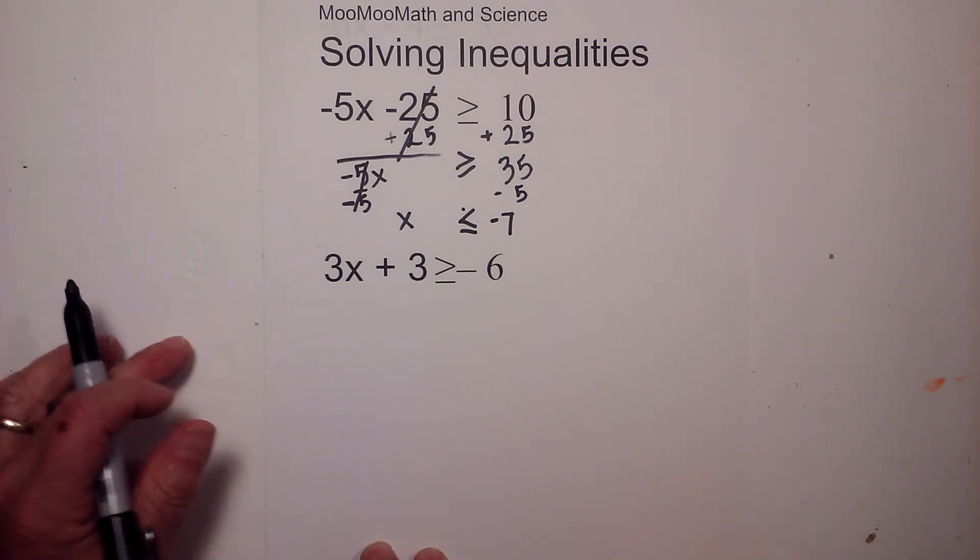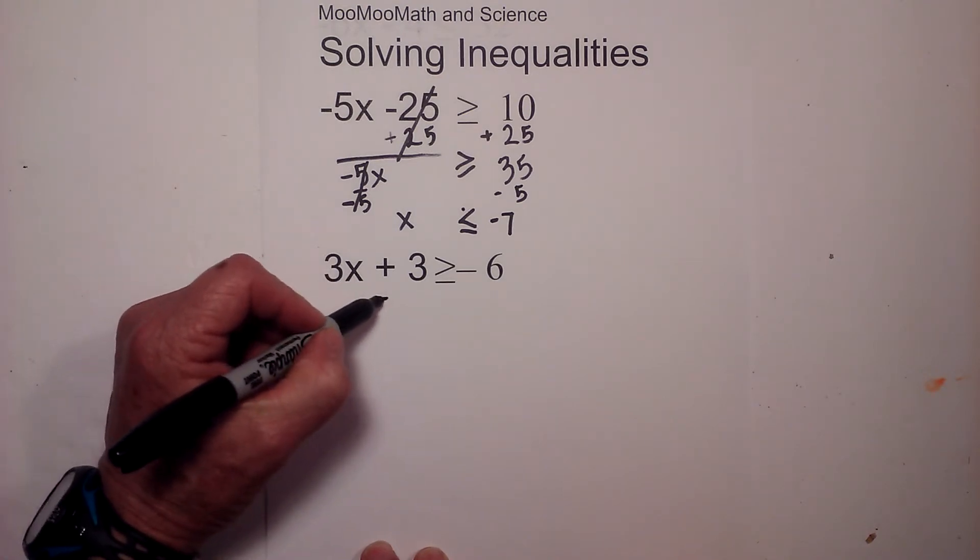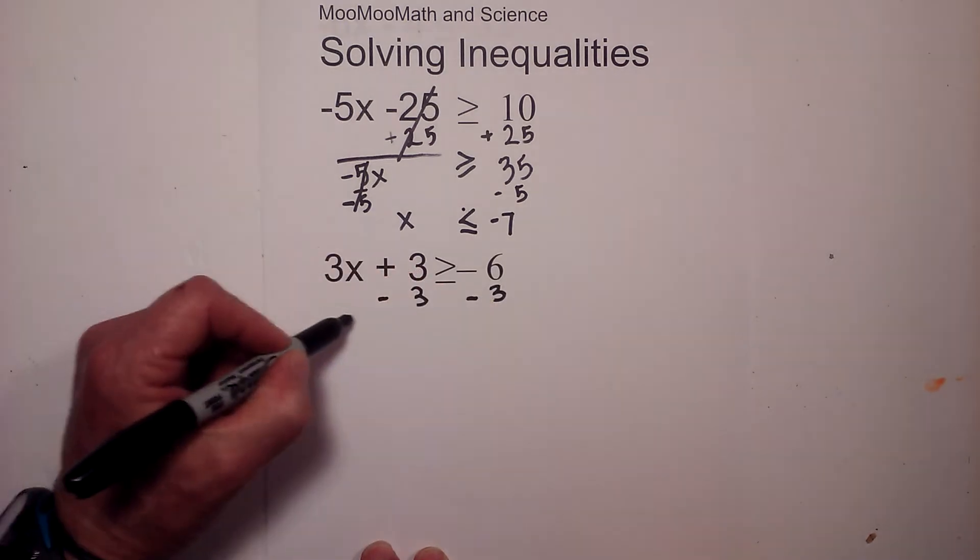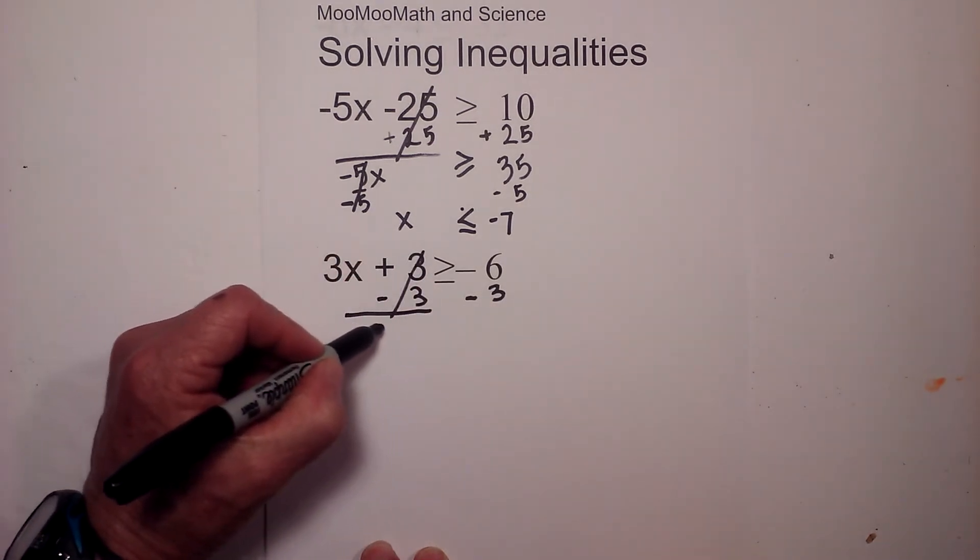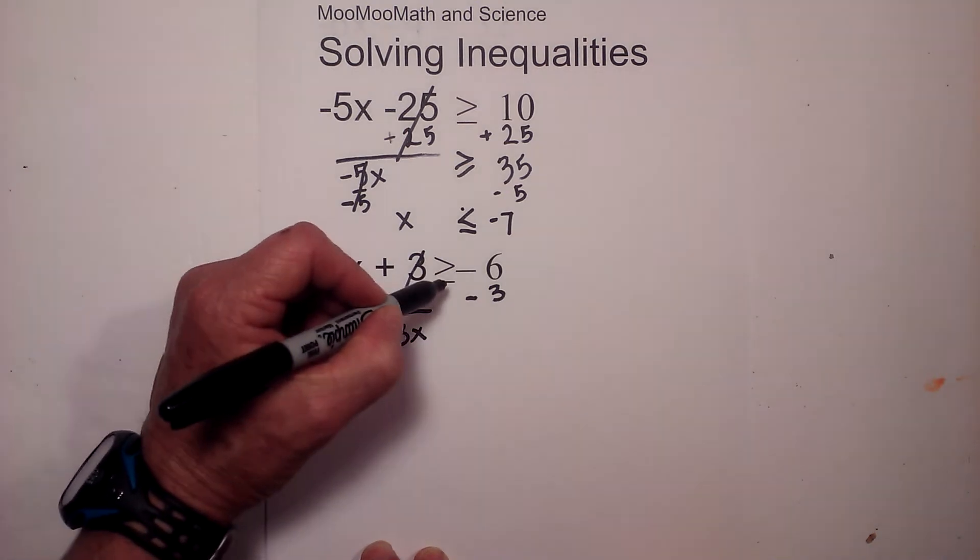Let's work another one. I want to get x by itself, I'm going to subtract 3 from each side. So draw a line, these cancel, this becomes 3x.